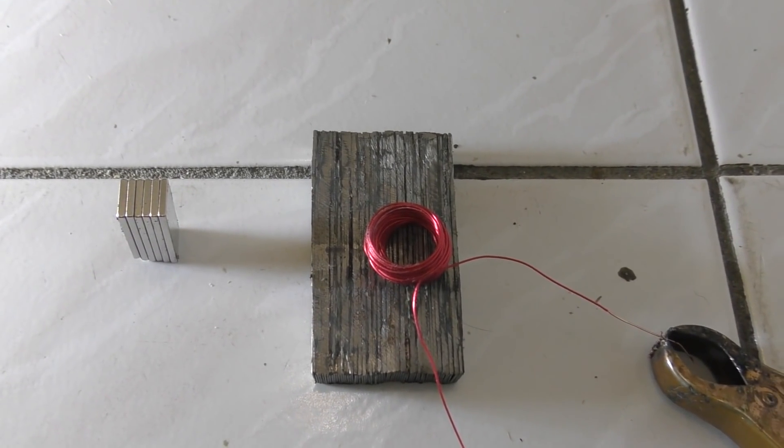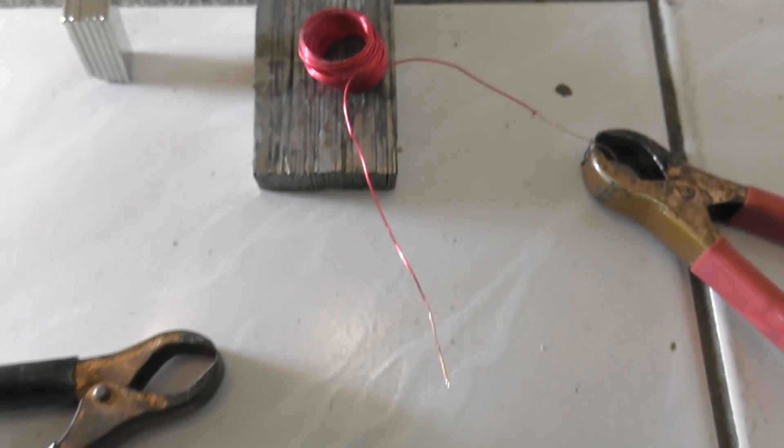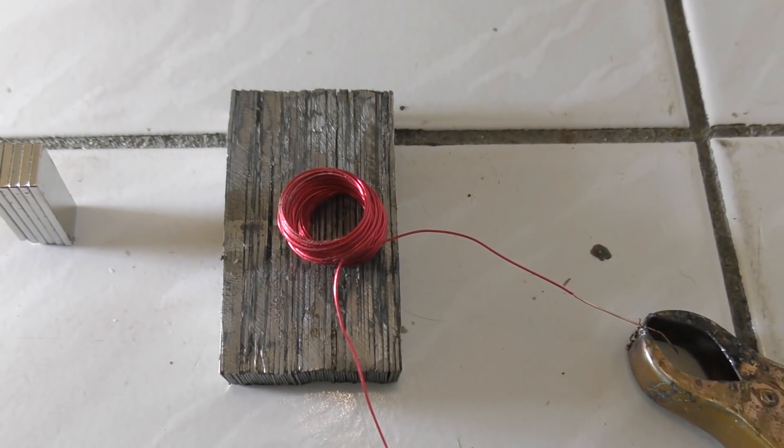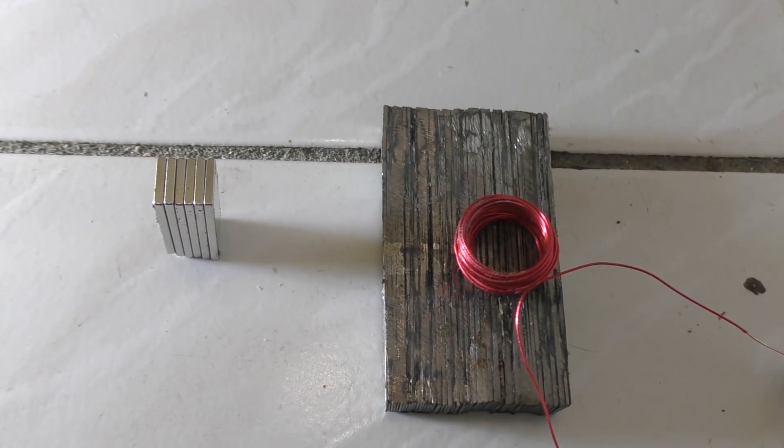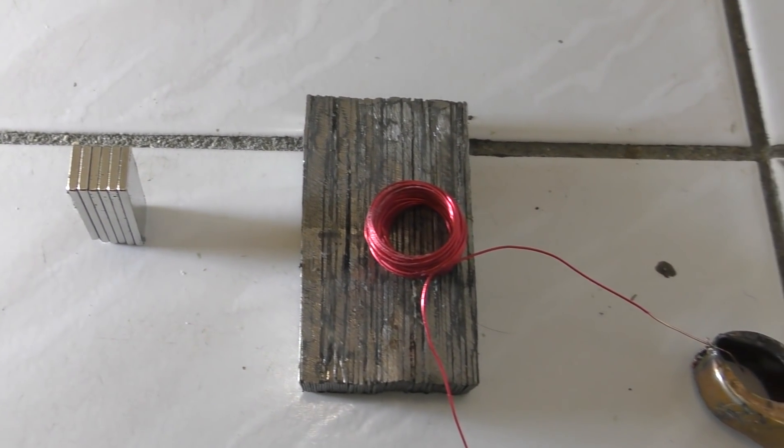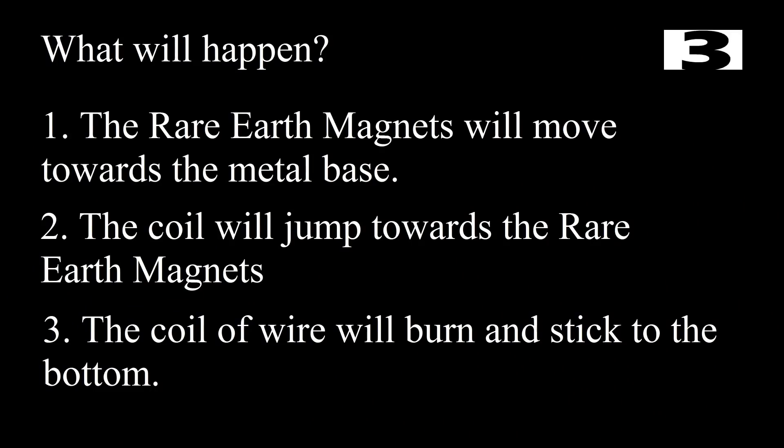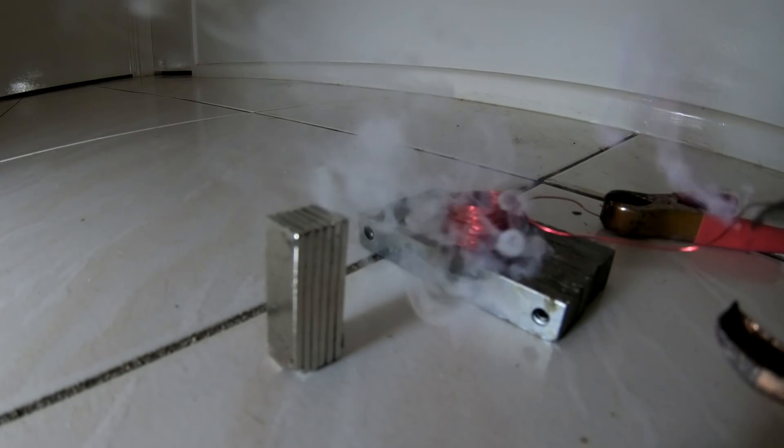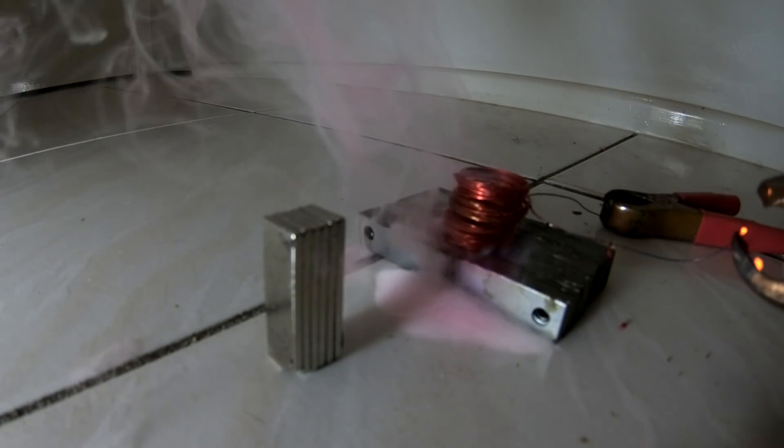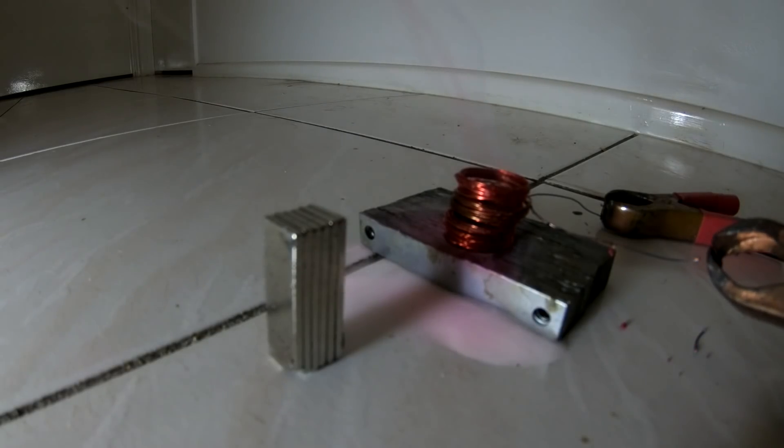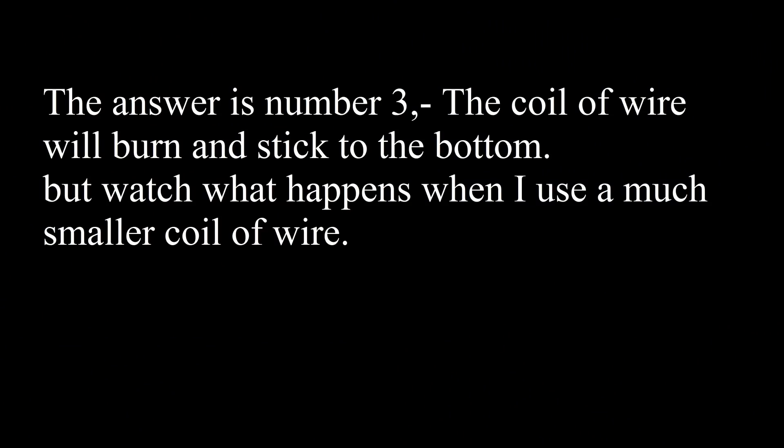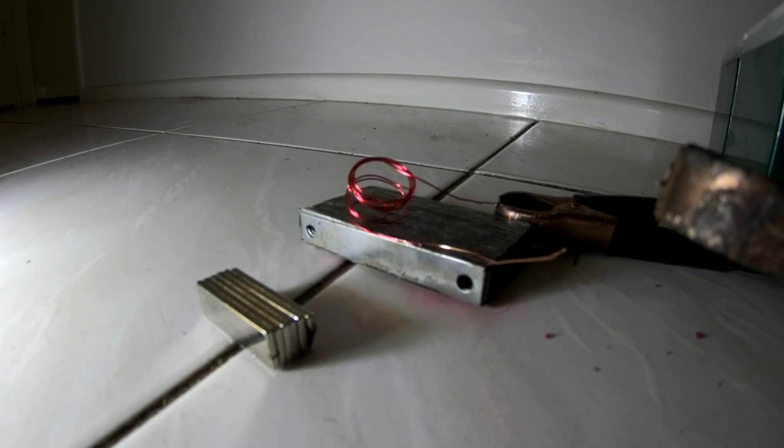But what's going to happen when I hook up 24 volts to that electromagnet? Theoretically, it should pull those other magnets closer. We'll see how this one goes.